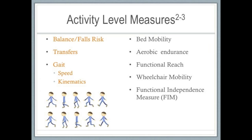Regarding activity measures, using tests to identify balance and falls risk is essential since falls are more likely for people with MS and can lead to serious functional deterioration. Transfer training will likely change over time, and patients will need to learn new strategies as their disease progresses to stay safe and maximize independence. Gait is impaired even in patients with very early MS — an EDSS of 1 to 3 — and it should be measured, especially since it will often be a primary goal.